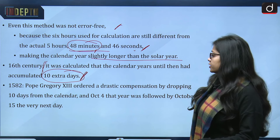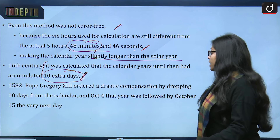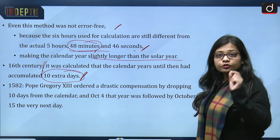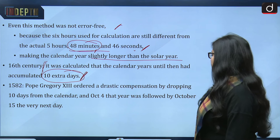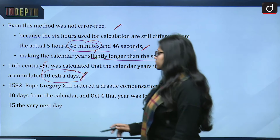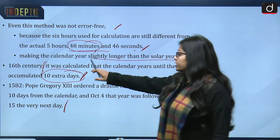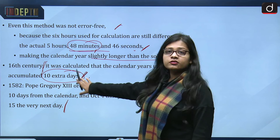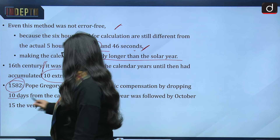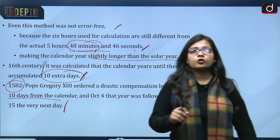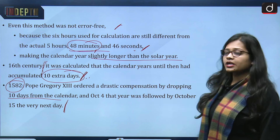In the year 1582, Pope Gregory XIII ordered a drastic compensation by dropping 10 days from the calendar. October 4th that year was followed by October 15th the very next day, compensating for the accumulated 10 extra days.